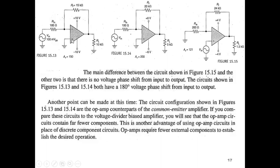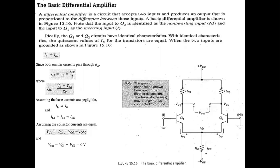The inverting and non-inverting inputs receive signals from different paths, so internally there must be a differential amplifier. We will discuss this internal differential amplifier here. In the op-amp, the signals coming to the inverting and non-inverting inputs are processed by the differential amplifier, and the difference becomes the output.